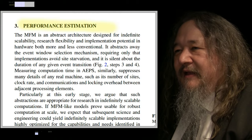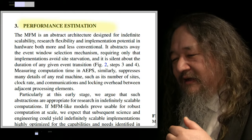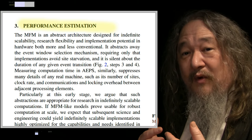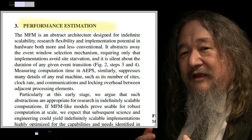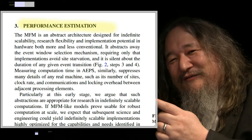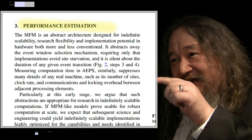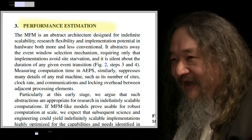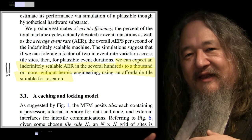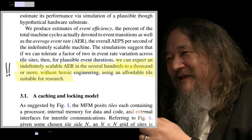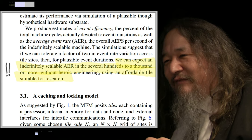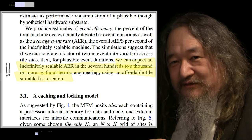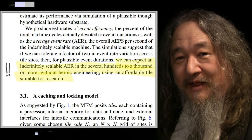It was one of the longer papers we did. Journal papers get a lot more intensive reviewing than conference papers, and the reviewers asked how this is going to work and perform. Section three, 'performance estimation,' was added in response to a reviewer request. We said we don't have actual hardware, but we can simulate and guess. The main line: 'We can expect an indefinitely scalable aer in the several hundreds to a thousand or more without heroic engineering using an affordable tile suitable for research.' That might be true for somebody else's definition of heroic engineering — it's not true for my hardware abilities with the T2 tile.